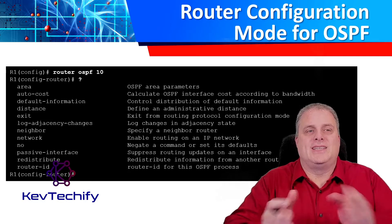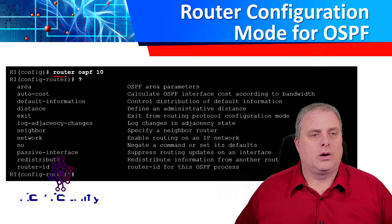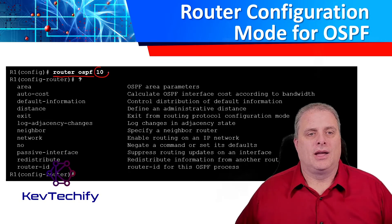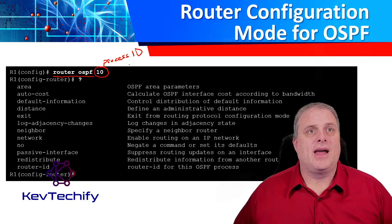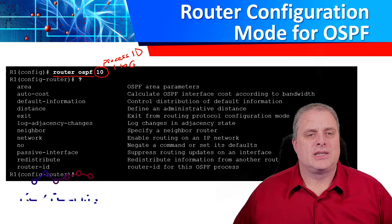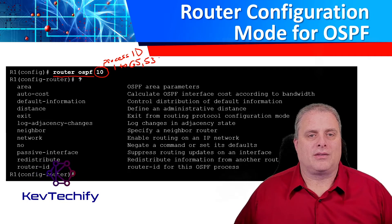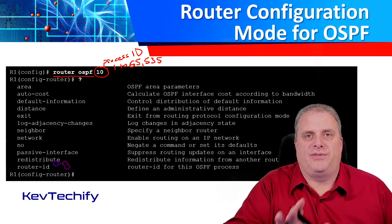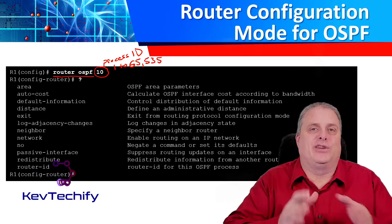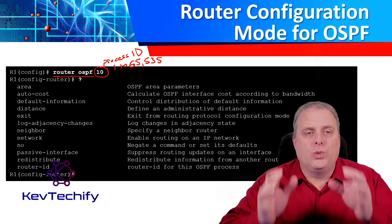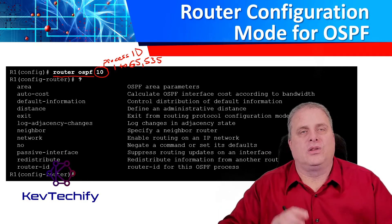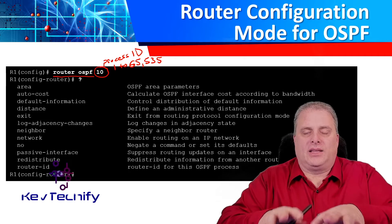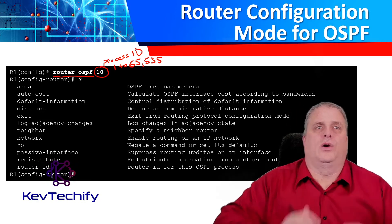OSPF version 2 is enabled by using the router OSPF and then the process ID command. This process ID can be a number anywhere between 1 to 65,535. That number is locally specific to the router, meaning each router could have a different number, but that is usually considered bad practice. You want to have the same process ID on all of your devices. That helps you maintain a nice continuity between all of your routers running OSPF.